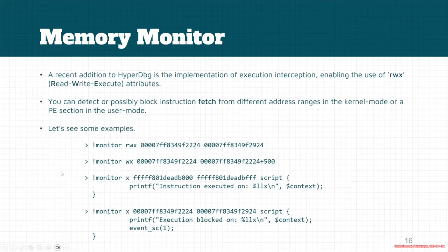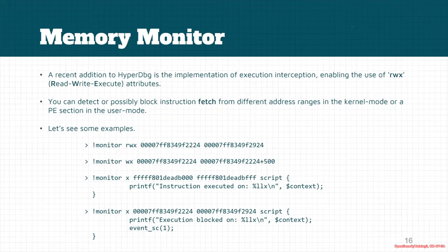Some examples: 'monitor rwx' monitors and pauses the debugger on any read, write, or execution in an address range. 'wx' stands for write and execute — if either happens in the range, the event is triggered. You can also use just 'x' without 'r' or 'w' to intercept only executions. Another example detects execution from one address to another and prints a message with the executed address. Using 'event_sc' (short-circuiting) can block the execution entirely.